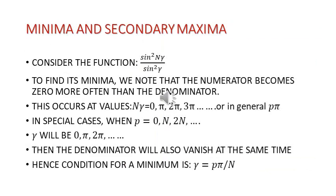We now discuss minima and secondary maxima. Consider the function sin²(nγ)/sin²(γ). In order to find its minima, we note that the numerator becomes zero more often than the denominator. This occurs at values of nγ equal to 0, π, 2π, 3π, and so on, or in general when nγ is equal to pπ. In special cases when p is equal to 0, n, 2n, and so on.